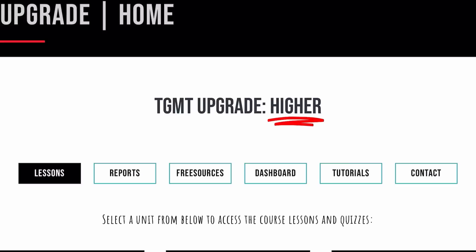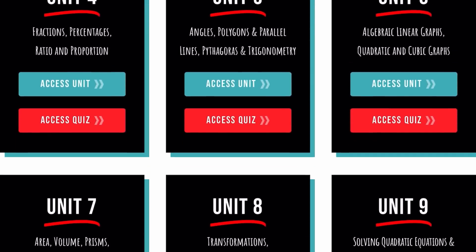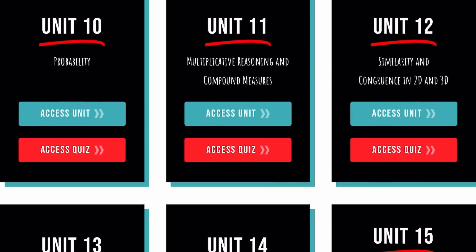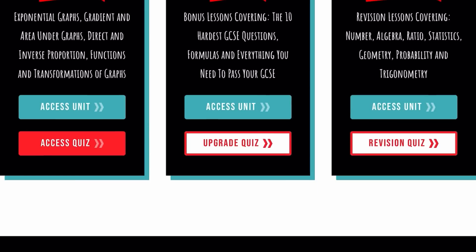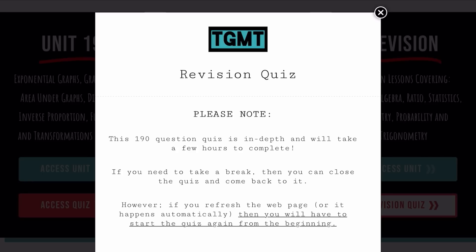Step 1. Head to the TGMT Hub, go to the bottom of the page once you've logged in and access the revision quiz. From here you can answer a question on every topic within the GCSE.